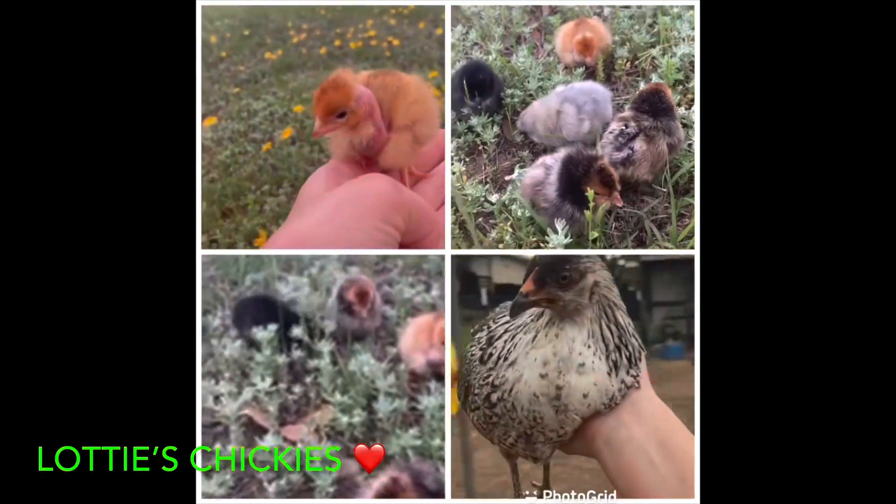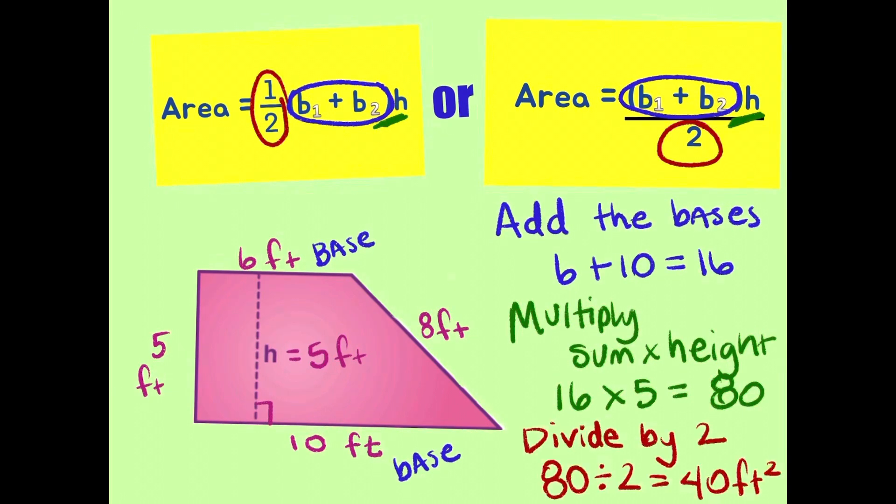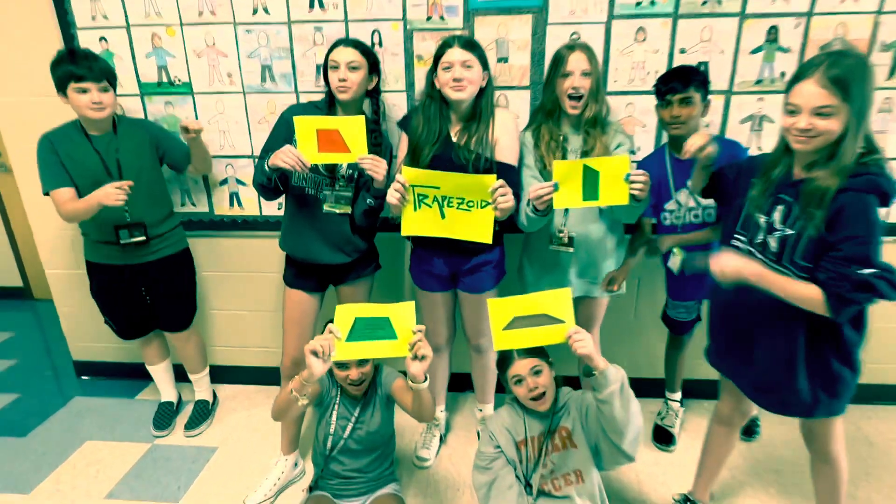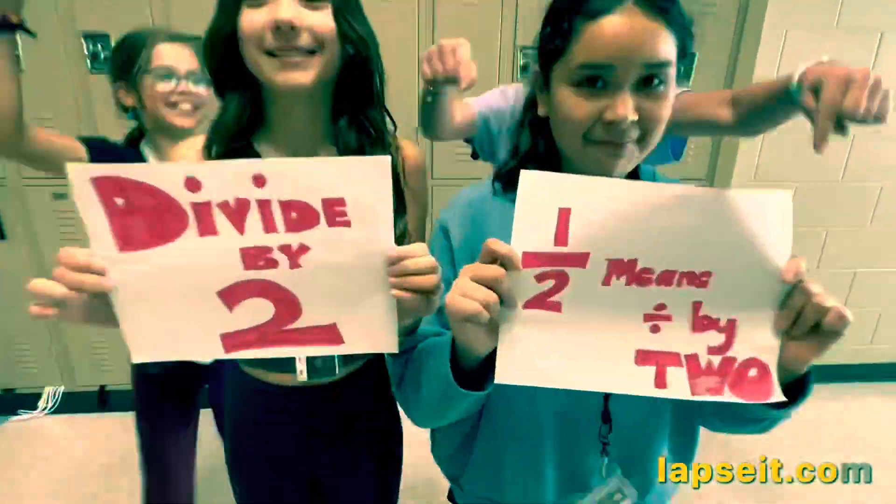Area of trapezoids. Three things you do: Add, multiply, then divide by two. You sing it. Area of trapezoids. Three things you do: Add, multiply, then divide by two.